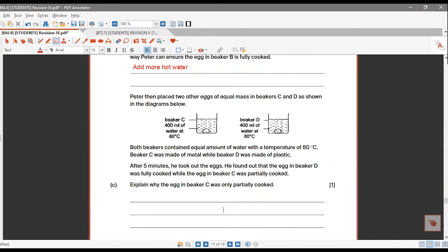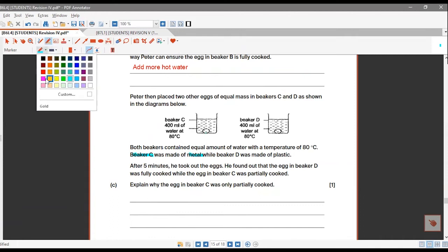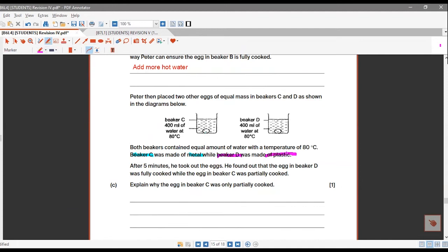But the material for Beaker C is made of metal, and the material for Beaker D is made of plastic, which means to say, what is your change variable now? The material of the beaker. Very good.